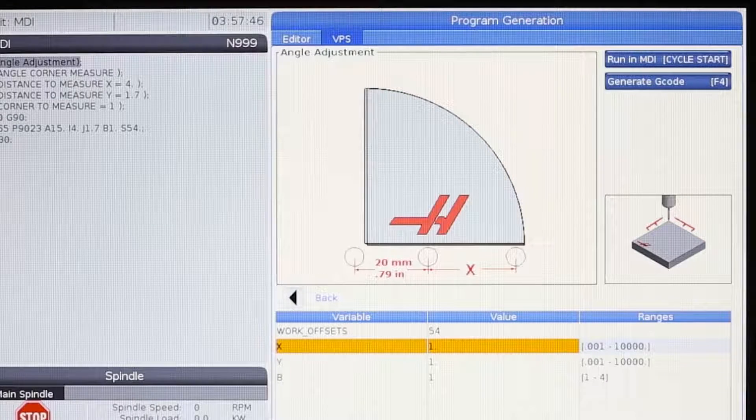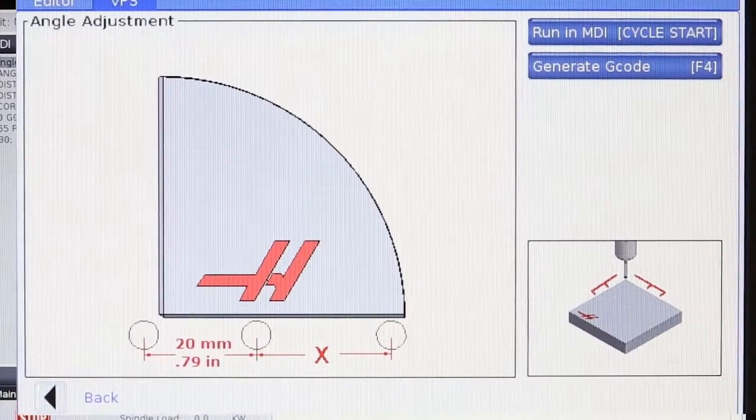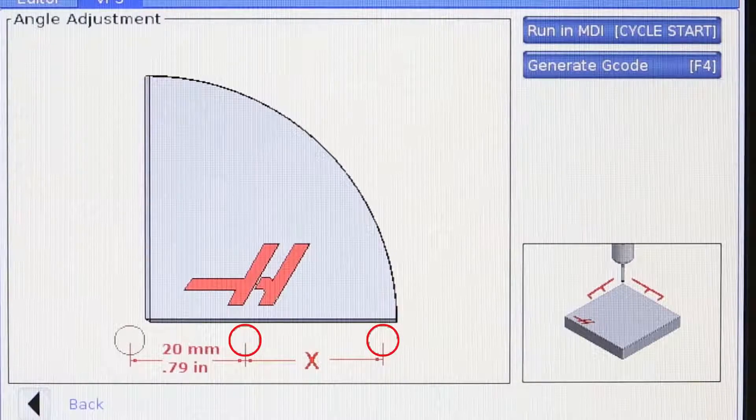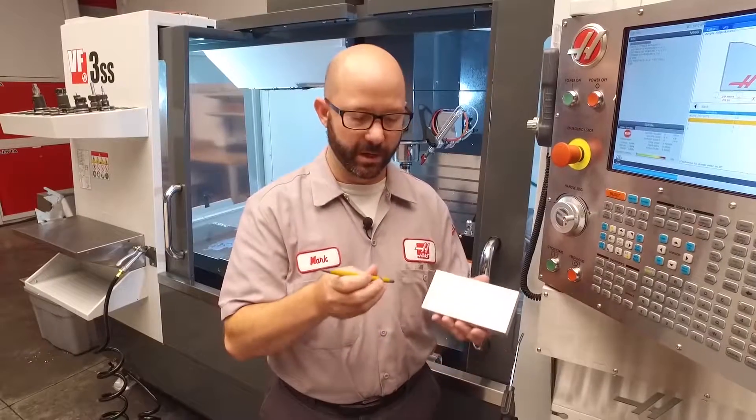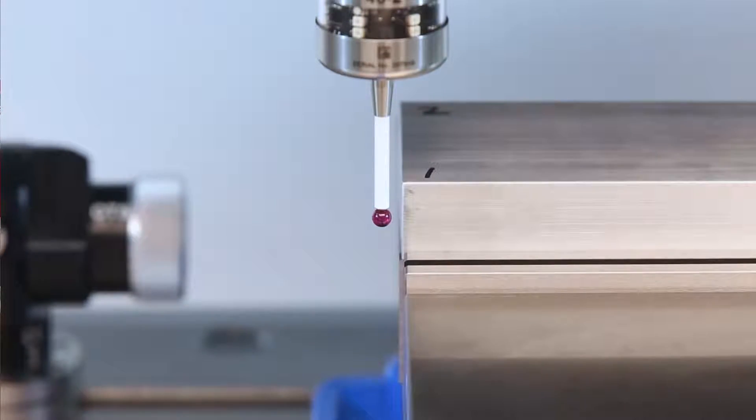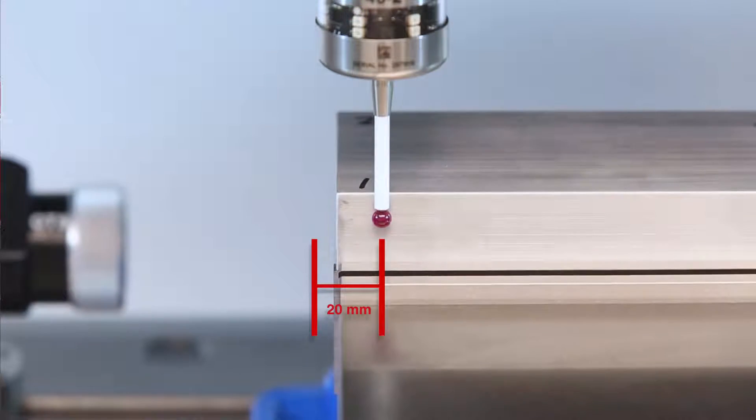Next item down the list, it's asking for an X value. What it means by X value is the distance between probe points along the X axis. What's gonna happen here is we're gonna handle jog our probe above the corner that we'd like to set our work offset to. Then, when we hit cycle start, the probe is gonna move 20 millimeters in the X, take a hit point.